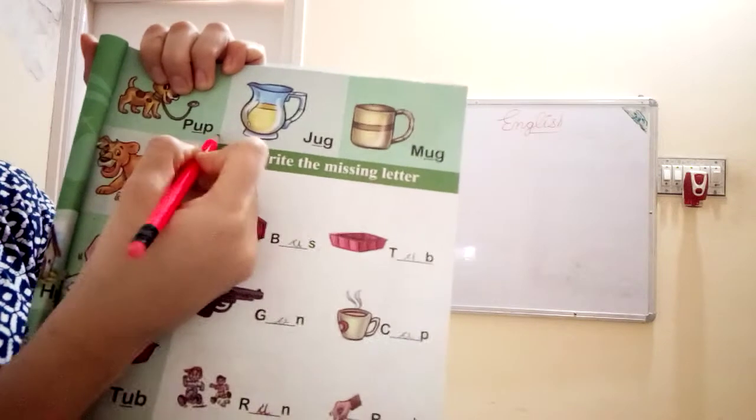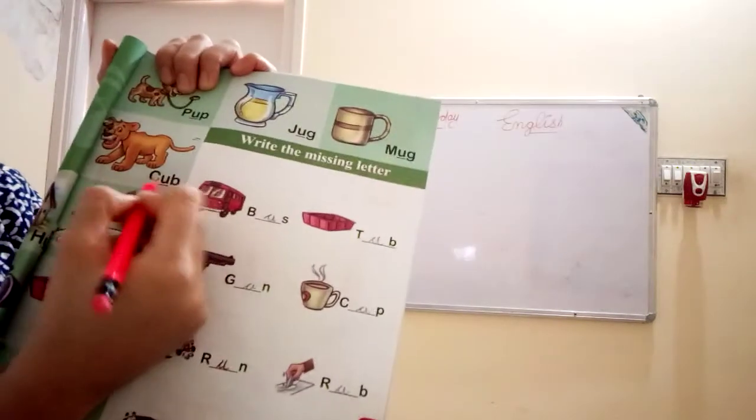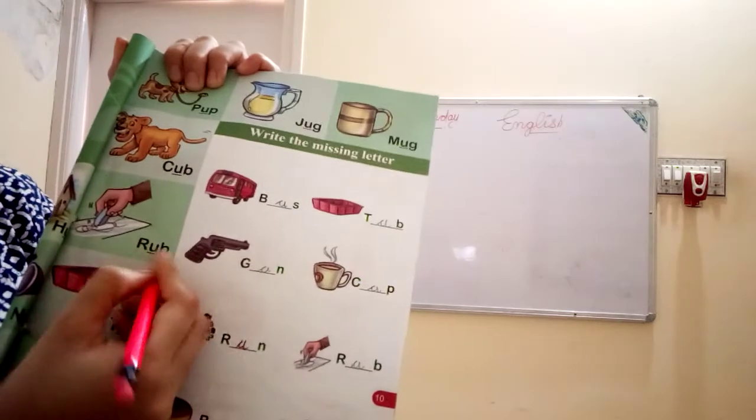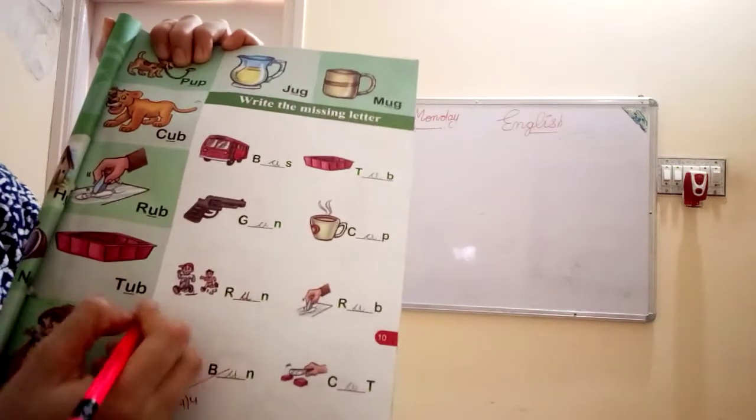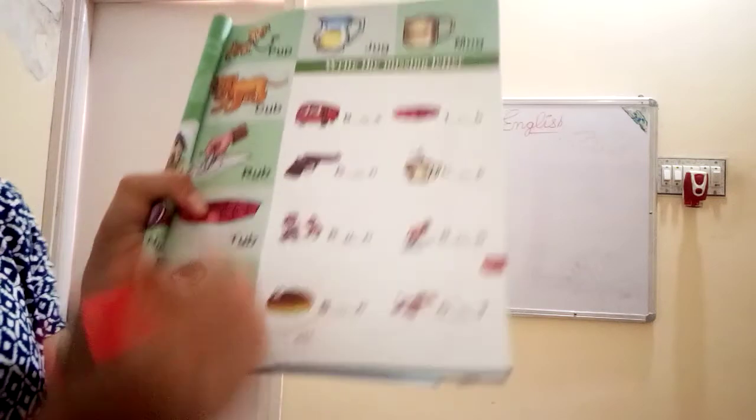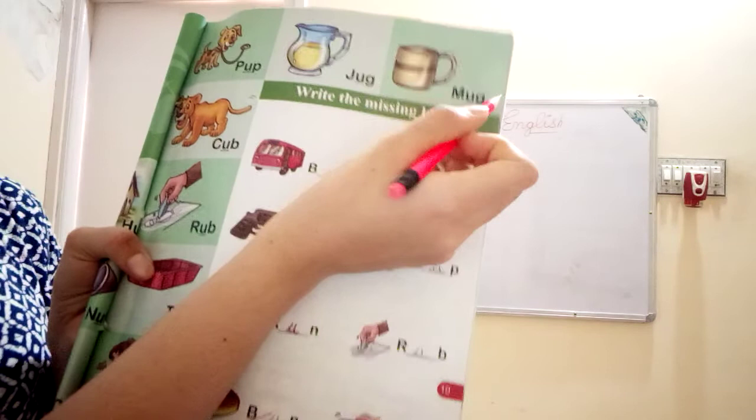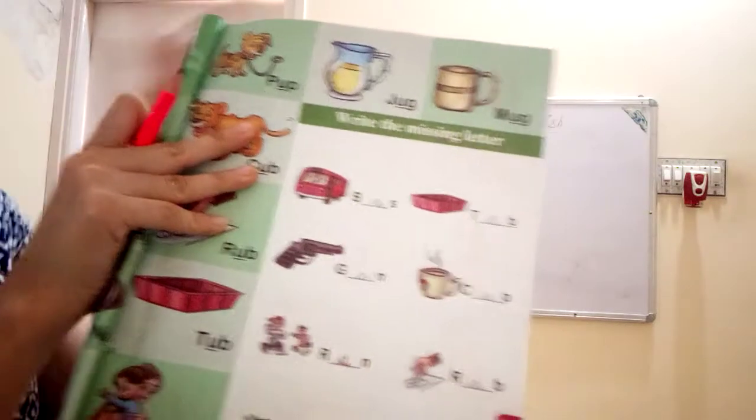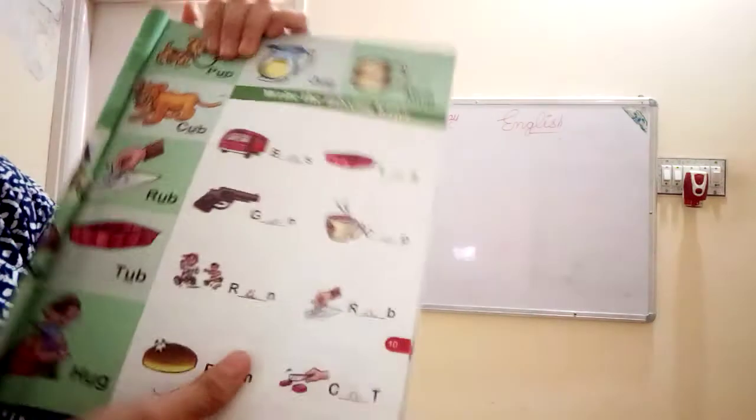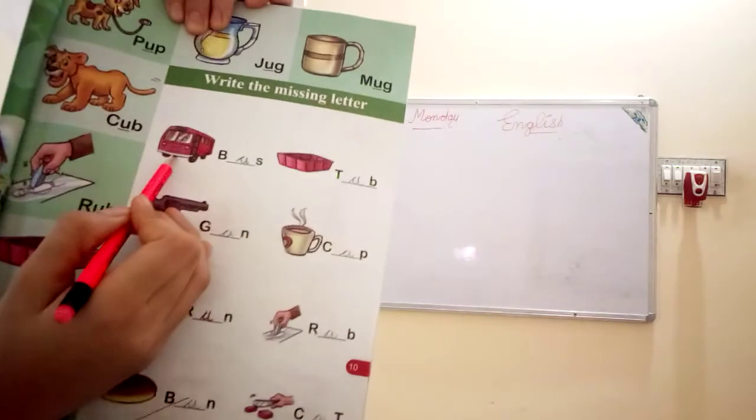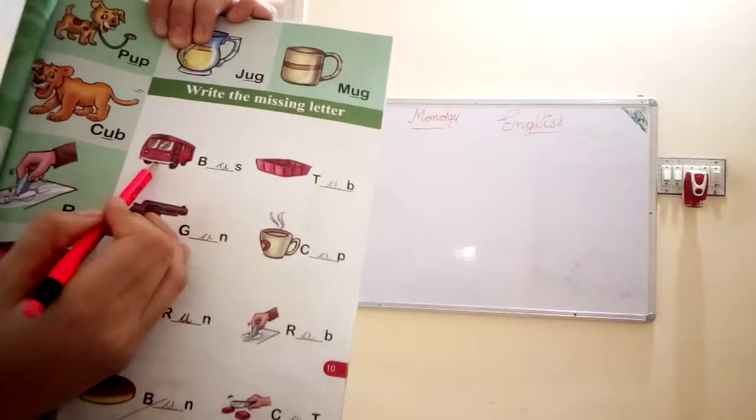Next. P.U.P. Pup. C.U.B. Cub. R.U.B. Rub. T.U.B. Tub. H.U.G. Hug. J.U.G. Jug. M.U.G. Mug. Write the missing letters.